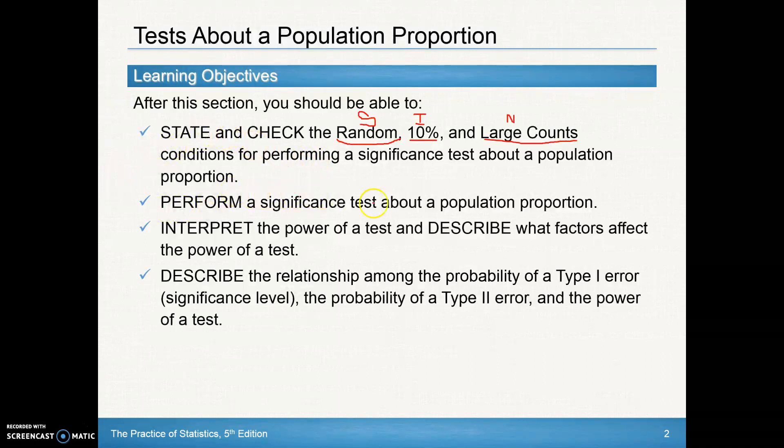We're going to learn how to perform a significance test about a population proportion. And again remember a population proportion, that is the parameter P. We'll also look at interpreting the power of a test, that'll be something new, and describe what factors affect the power of a test. We'll also be able to describe the relationship among the probability of a type 1 error, the probability of a type 2 error, and the power of a test.